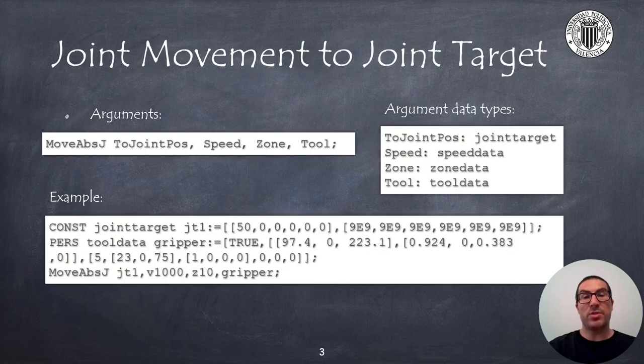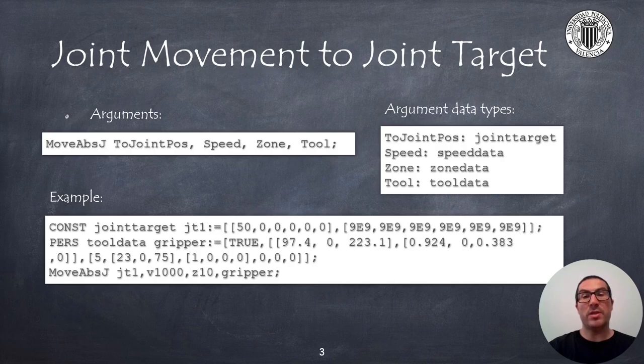The MoveAbsJ instruction allows you to move joints in a non-linear motion, that is, robot joints will move independently to a given joint target value. You need to specify the joint target position, the speed, the zone and the tool data that will affect the overall motion.